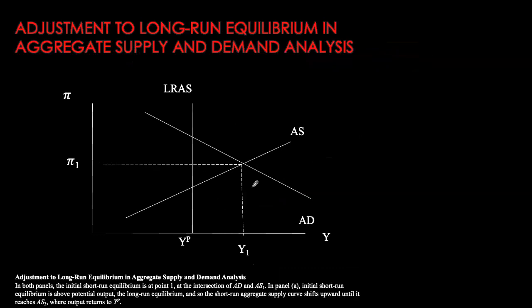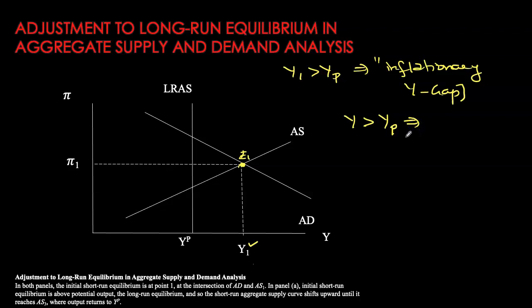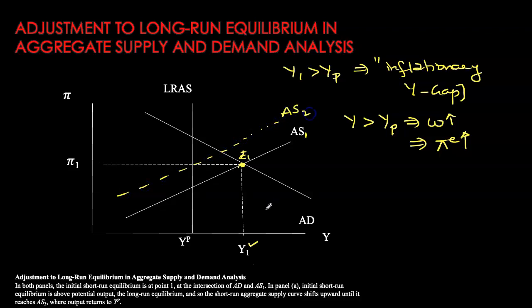Here I have my short-run equilibrium happening at point E1, where aggregate output supplied exactly equals aggregate output demanded. Our short-run equilibrium GDP is Y1 and inflation is at pi 1. This GDP is higher than my potential, so the economy is facing a positive output gap, also referred to as an inflationary output gap. In the long run, wages are not sticky — they will be fully flexible. Because of the positive output gap, wages are driven up, and expectations of inflation are driven up. The short-run aggregate supply curve is no longer constant at AS1 — it shifts up to reflect this higher expectation of inflation.